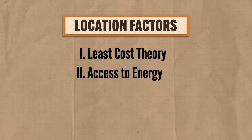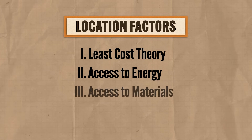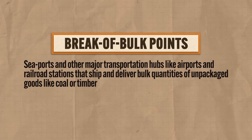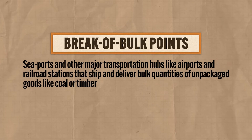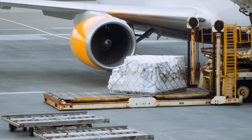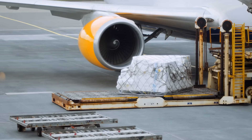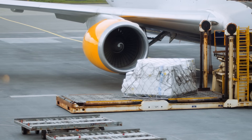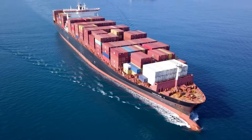The second factor that can predict the location of economic activity is access to energy. In order to manufacture goods, abundant and reliable power is needed, so factories are most likely to locate in close proximity to their energy source. The third factor is access to materials — factories requiring specific raw materials will likely locate close to those materials, or at least near break of bulk points such as seaports, airports, and railroad stations that ship and deliver bulk quantities of unpackaged goods like coal or timber. The fourth factor is transportation: with the introduction of cargo planes in the mid-20th century, some industries locate near major airports or break of bulk points to take advantage of bulk air shipments.